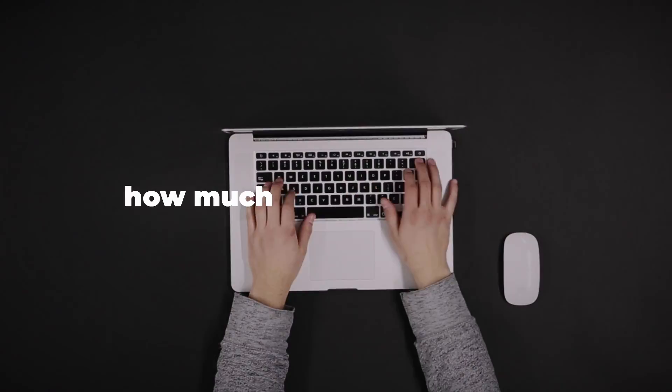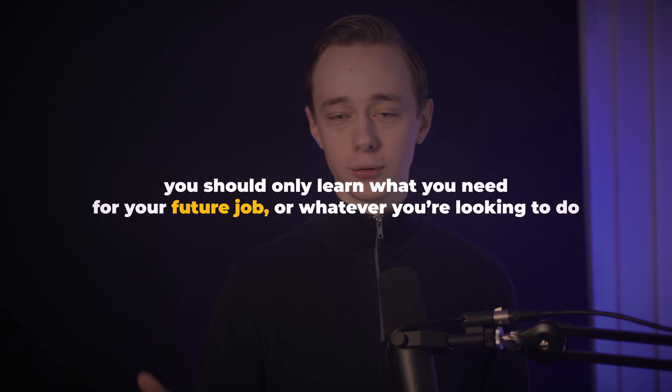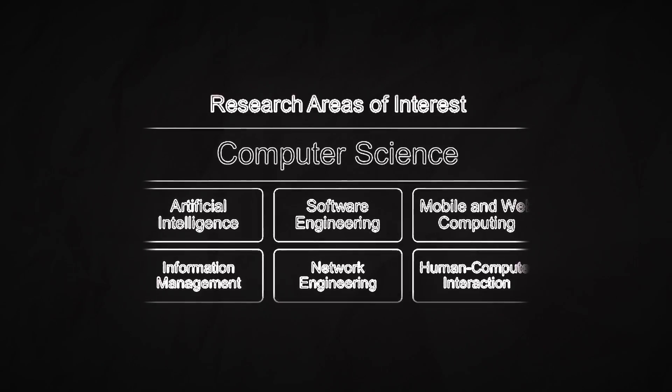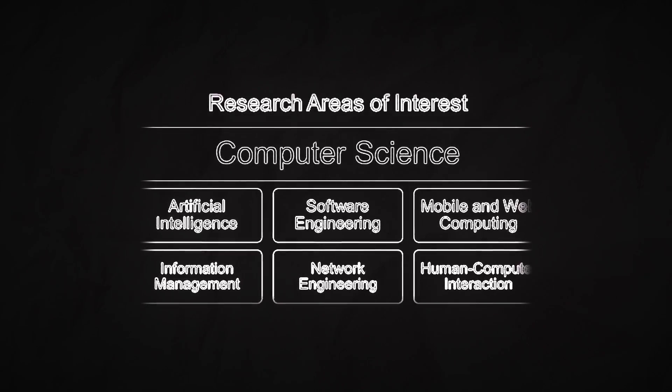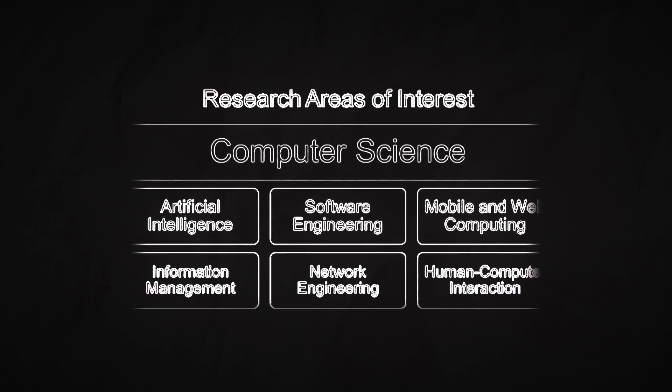Step one. The first step to self-studying a computer science degree is actually deciding how much you want to study and how much you want to learn, because here it's really all about prioritizing what to learn. You're not getting a degree for the sake of it, like many people do at universities, so you should only learn exactly what you need for your future job or whatever you're looking to do. There are a couple of different areas of CS, and some are more important than others.